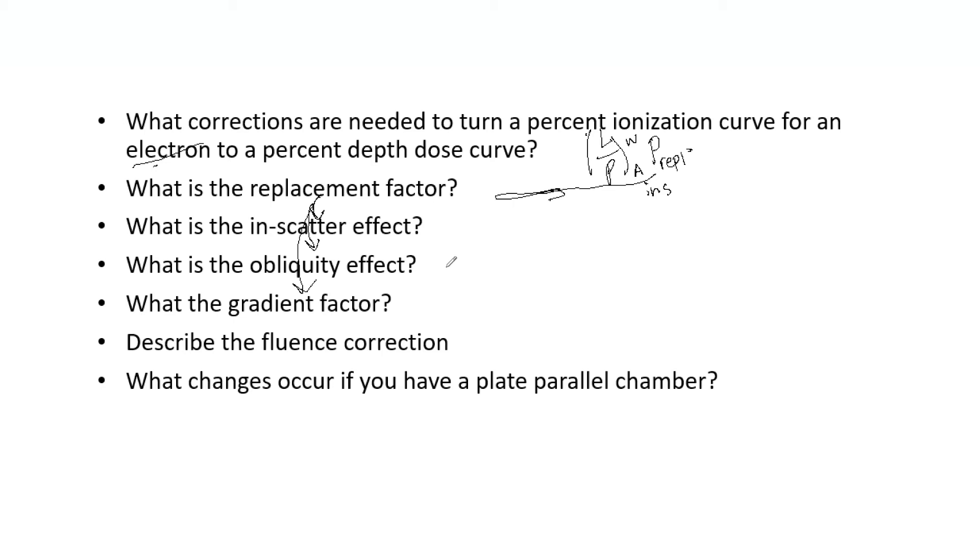Now the obliquity effect. This decreases the fluence in the cavity because the electrons travel in straight lines in air cavities instead of the oblique paths like without the air cavity. So you have one effect that increases fluence here and you have another factor here that decreases fluence. For the most part, to be honest, these things, to my knowledge, do cancel each other out, but we still need to know and understand these things.